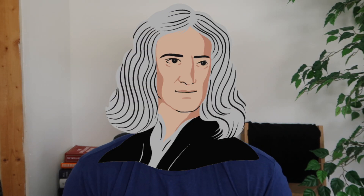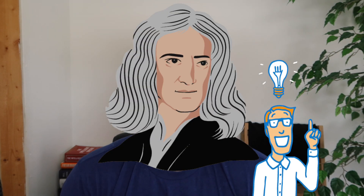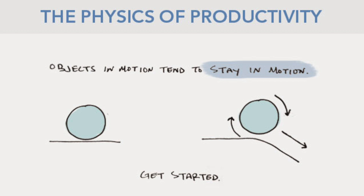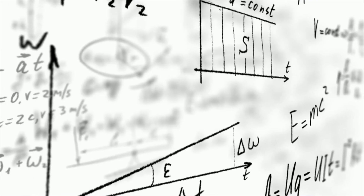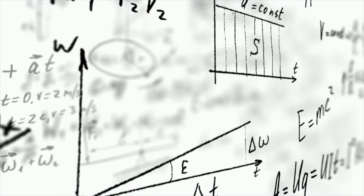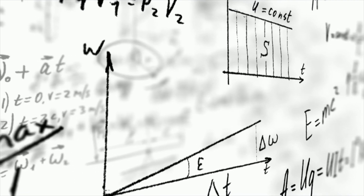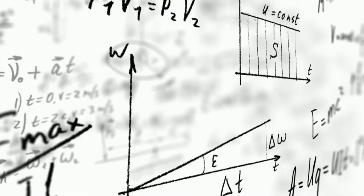Sir Isaac Newton — maybe you've heard of him, he's a pretty smart guy. He states in his first law of motion that an object in motion tends to stay in motion and an object at rest tends to stay at rest. This channel is not a physics lesson, so I will try not to bore you, but bear with me. To get from an object at rest to an object in motion, a force has to be acted upon it.